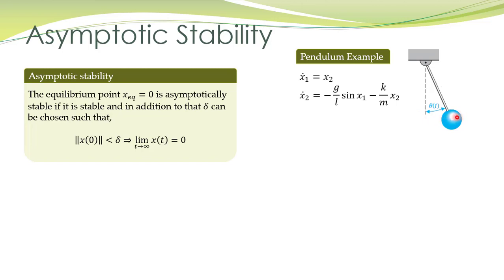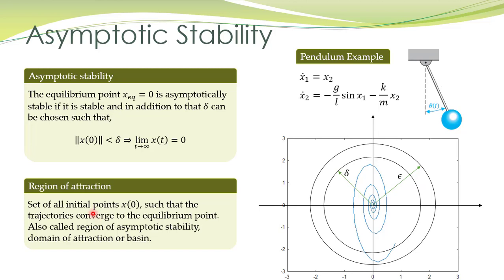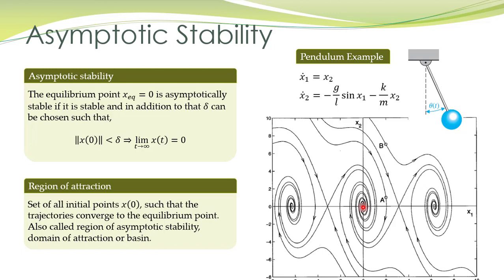Consider the pendulum system: if we drop the pendulum it will oscillate about its equilibrium point at the origin, and if there is friction it will finally settle down at its equilibrium point at the origin — hence the system is asymptotically stable. This is also apparent from the phase portrait of the pendulum system, where trajectories finally converge to the equilibrium point. The set of all initial conditions for which trajectories converge to the equilibrium point is called the region of attraction, also called the basin of attraction or domain of attraction.